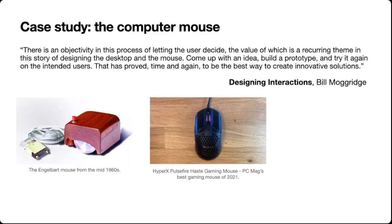A case study I like to use is the design of the computer mouse — it's literally the first chapter of Bill Moggridge's book, Designing Interactions, which is used as a textbook in some interaction design programs. The mouse was co-invented by Bill English and Doug Engelbart in the mid-60s, and the Engelbart mouse is not that different from a contemporary gaming mouse. They have basically the same form and functionality, and have had it for the entire lifecycle of this object.